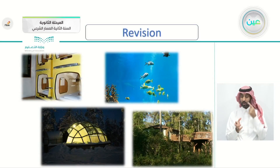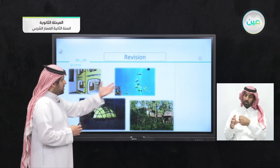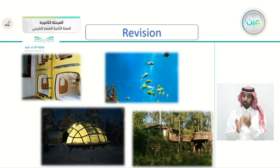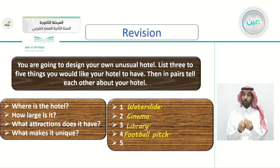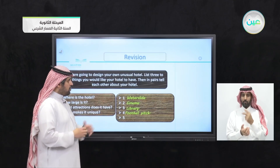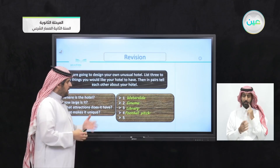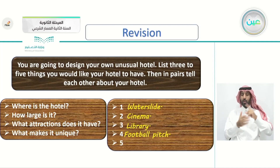Before we get to today's lesson, let's revise what we previously took — the articles about hotels and traveling, which is the main theme of this unit. We talked about the capsule hotels, the undersea hotel, and the igloo hotel — let's call it the igloo hotel because it's igloo shaped — and the hotel above the trees in Brazil. Then we discussed this question together, where you were designing your own unusual hotel, letting your imagination go free to come up with unique hotel ideas, brainstorming maybe with your friends. I came up with these ideas: waterslide, cinema, library, and football pitch.